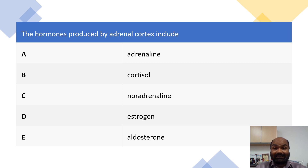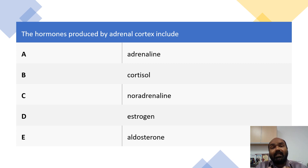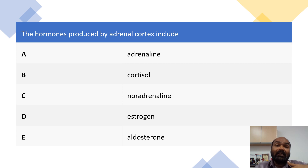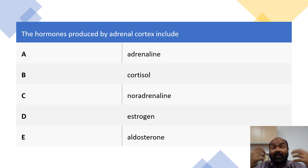Please pause the video and answer first and we will discuss it together. So let's discuss the adrenal cortex first — the function of the adrenal cortex. So we have the adrenal gland, which is above our kidneys. This adrenal gland can be divided into two parts: the adrenal medulla, which is the inner part, and the outer part, which is the adrenal cortex. The adrenal cortex can be divided into three layers, and how do you remember it? It's GFR — a mnemonic. GFR is the glomerular filtration rate, which we normally use for kidneys, and since we use it for the kidneys, we can also use it here.